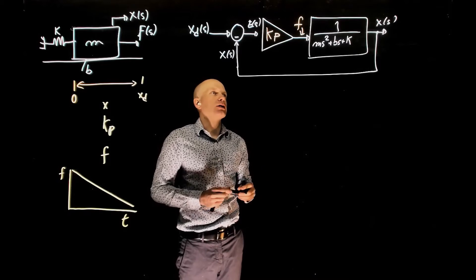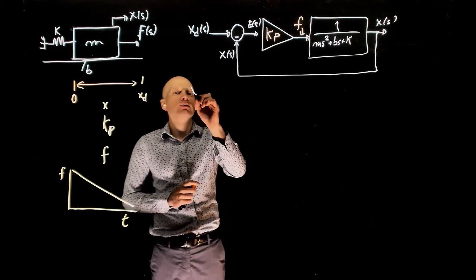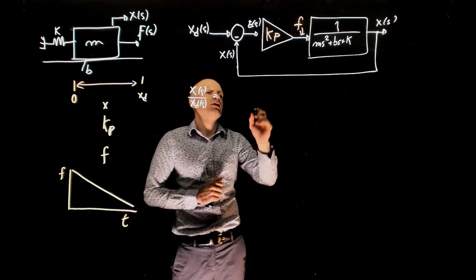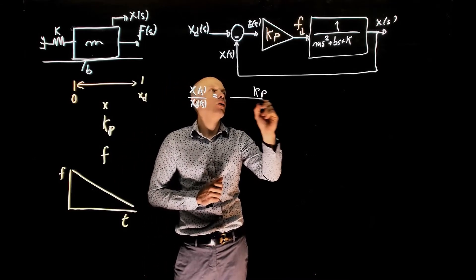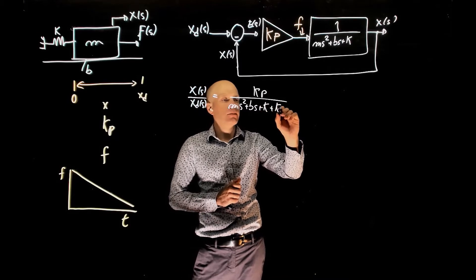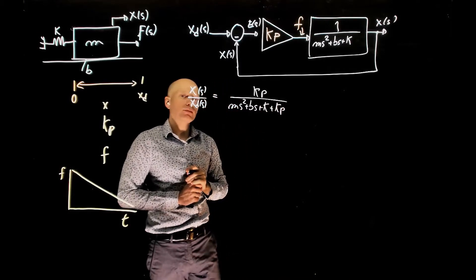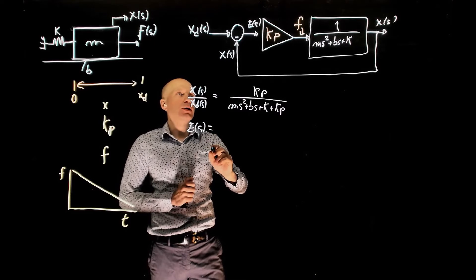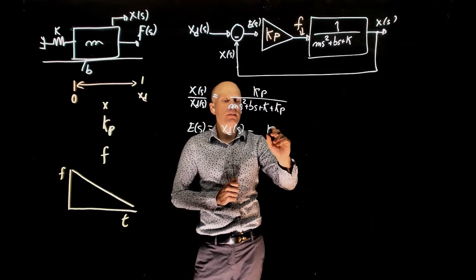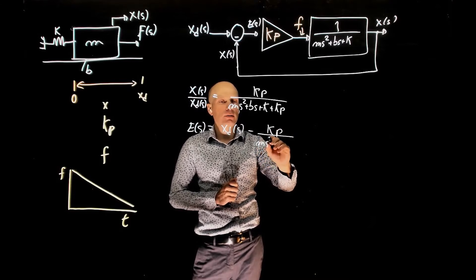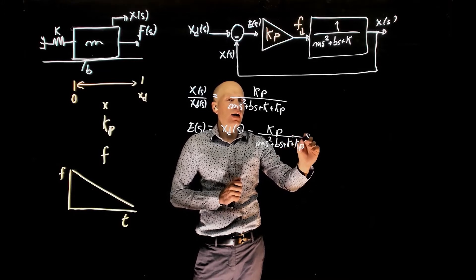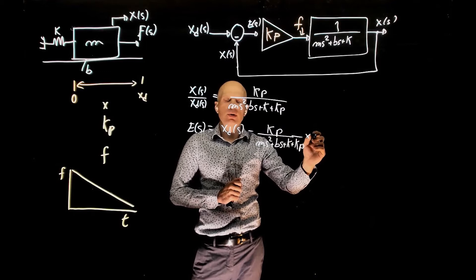What is the steady state error in this case? The closed loop transfer function x/xd is kp over ms² + bs + k + kp. The error is xd minus the actual output, which equals (ms² + bs + k) over (ms² + bs + k + kp) times the input xd.